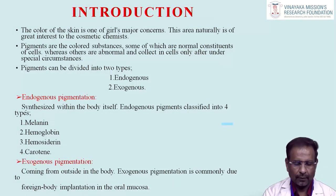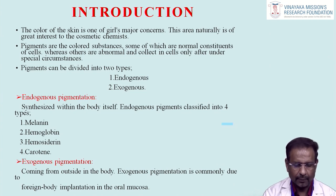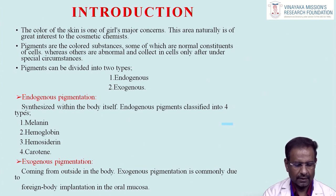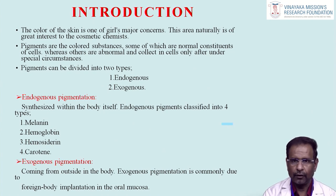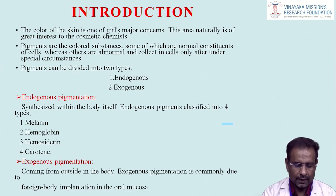The color of the skin is one of the major concerns. Pigments are colored substances, some of which are normal constituents of cells, whereas others are abnormal and collect in cells only under special circumstances. Pigmentation is divided into two main categories: endogenous pigmentation and exogenous pigmentation.